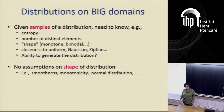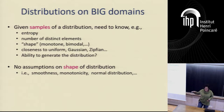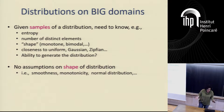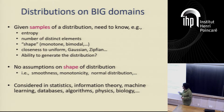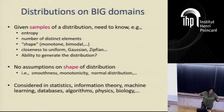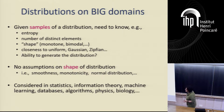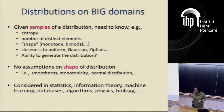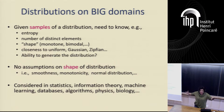In general, I don't want to assume we know anything about the shape of this distribution. I'm not going to assume it's smooth in any sense, or that it's some type of Gaussian where I just don't know the parameters. We know nothing about this distribution. This kind of problem is not new — it's been considered in statistics, information theory, machine learning, databases, algorithms, physics, and biology. It's a general type of problem.